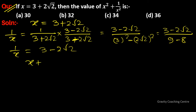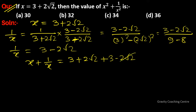Now we add x plus 1 upon x: (3 plus 2 root 2) plus (3 minus 2 root 2). The 2 root 2 terms cancel, so x plus 1 upon x equals 6. Therefore x square plus 1 upon x square is computed next.